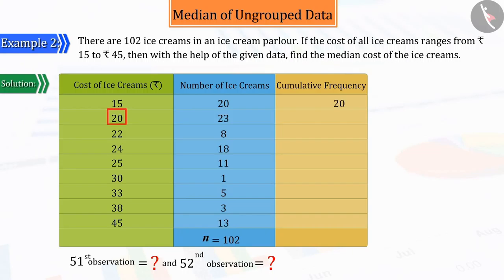Similarly, in the second line, let's group the ice creams that are priced up to Rs. 20. Their total number is 43, because in this, 20 ice creams that are priced up to Rs. 15 are also included.